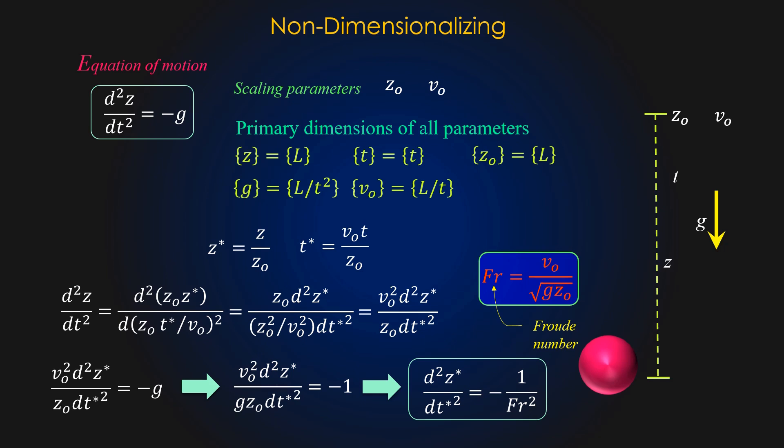Second, it reduces the number of parameters in the problem. In the original equation, there is one dependent variable z and one independent variable t and three additional dimensional constants g, v0 and z0. The non-dimensionalized problem contains one dependent parameter z star, one independent parameter t star and only one additional parameter, namely dimensionless Froude number. The number of additional parameters has been reduced from 3 to 1.